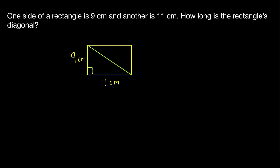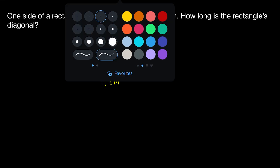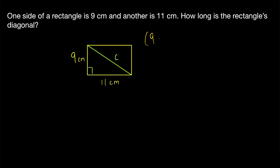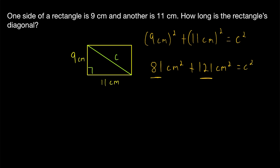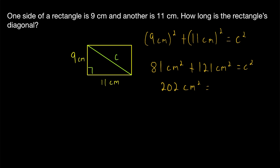Since this is a rectangle we have right angles, giving us a right triangle. We'll call the diagonal C. Applying the Pythagorean theorem: 9 centimeters squared plus 11 centimeters squared equals C squared. 9 cm² is 81 cm² and 11 cm² is 121 cm². Remember, we have to square both the number and the units. So 81 cm² plus 121 cm² equals C squared.